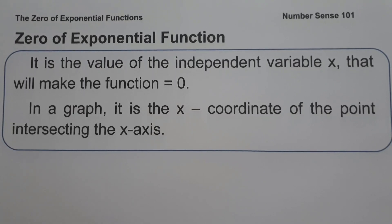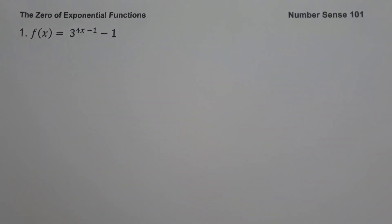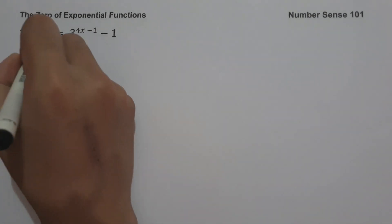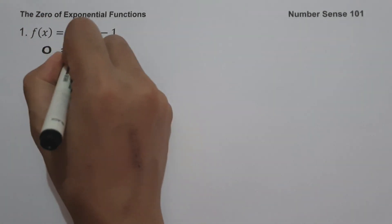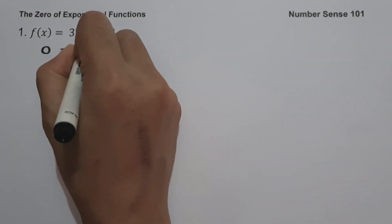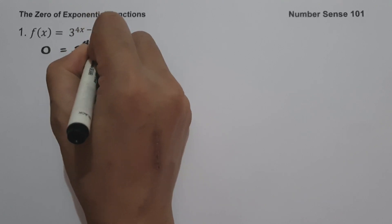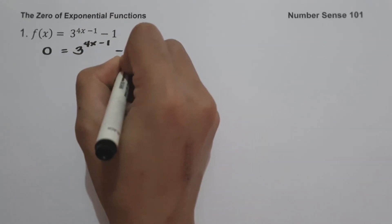Let's start with example number one: f(x) = 3 raised to (4x minus 1) minus 1. To find the zero of the given function, the first step is to equate the function equal to zero. So we have 0 = 3 raised to (4x minus 1) minus 1.